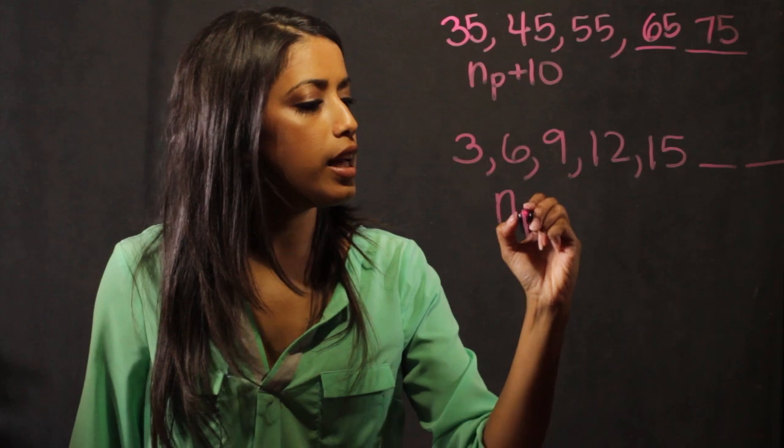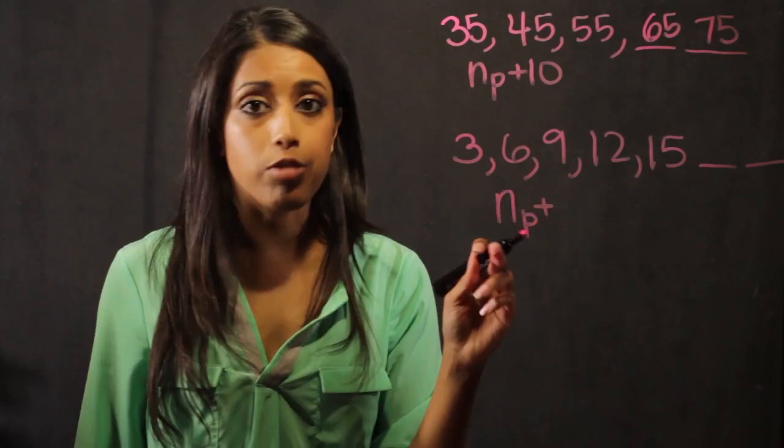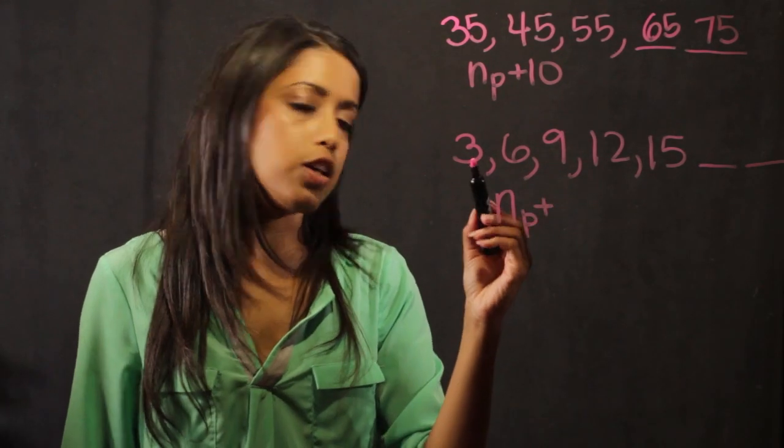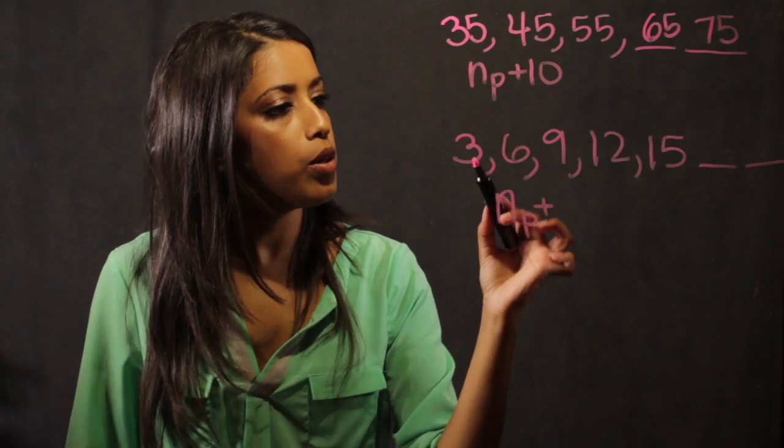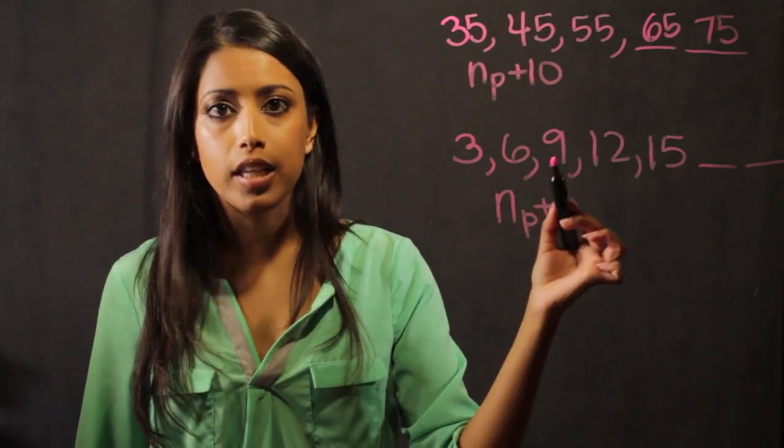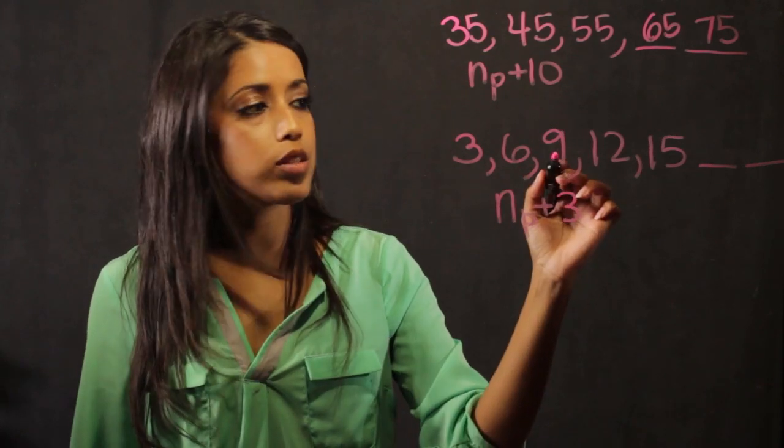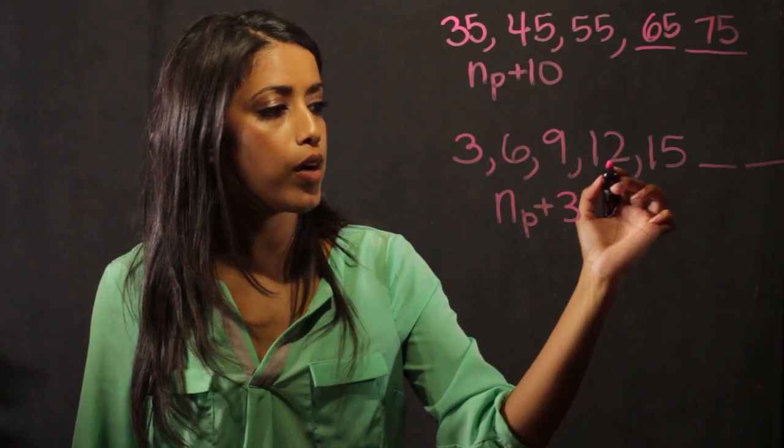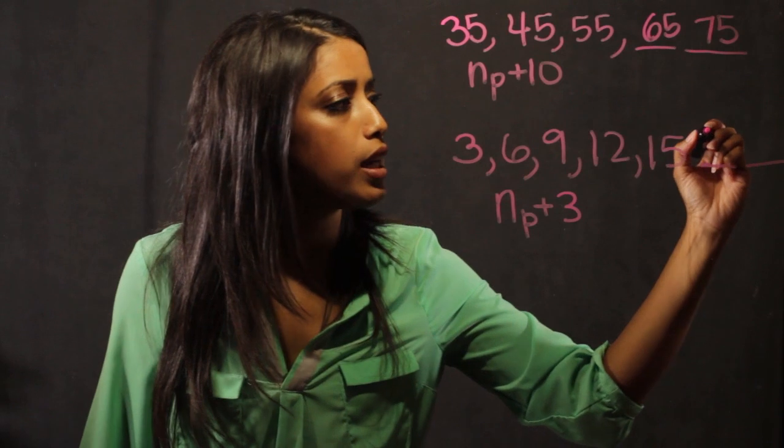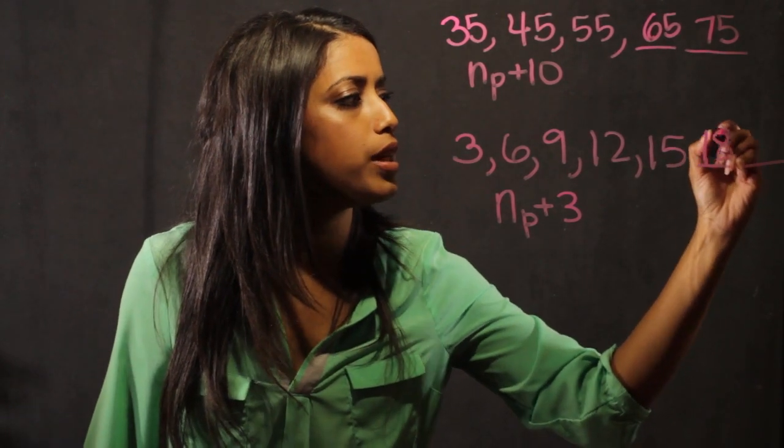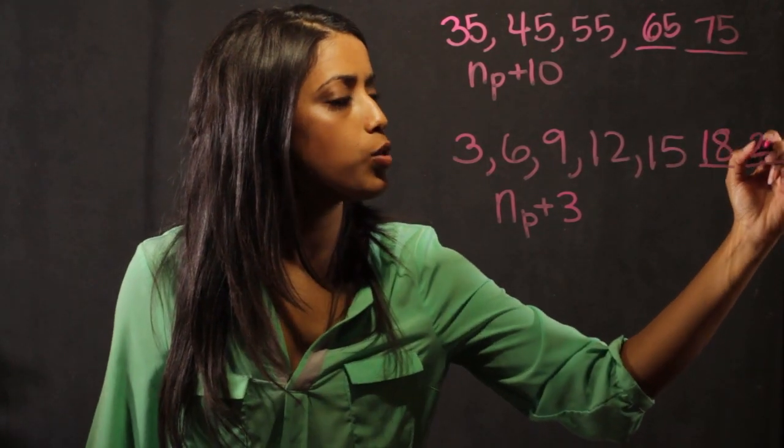So my beginning number is represented by np, and I look at what does it take to get to the next number. So 3 plus what gives me 6, which is 3, right? 6 plus 3 gives me 9, 9 plus 3 gives me 12, 12 plus 3 gives me 15, so I can easily see that the next numbers are going to be 18 and 21.